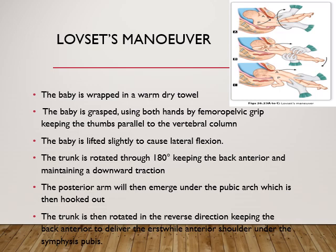Lovset's maneuver is a technique to deliver the fetal arm. The baby is wrapped in a warm dry towel and grasped using both hands by femoro-pelvic grip, keeping the thumbs parallel to the vertebral column. The baby is slightly lifted to cause lateral flexion and the trunk is rotated through 180 degrees keeping the back anterior and maintaining downward traction. This causes the posterior arm to emerge under the pubic arch, which is then hooked down. The trunk is then rotated in the reverse direction — keeping the back anterior — so that the anterior shoulder is delivered under the symphysis pubis.